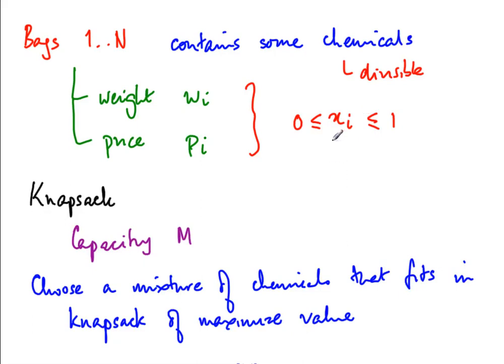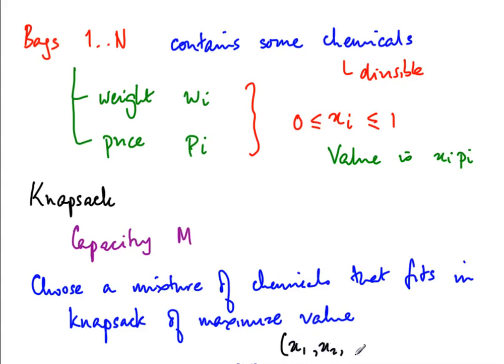When you take fraction Xi, you get a proportionate value: Xi times Pi. So if you take half the bag worth a million, you get half a million. The mixture is a vector X1, X2, up to XN, telling you how much of each chemical you have taken. Each Xi is between 0 and 1, indicating whether you took none, all, or part of it.